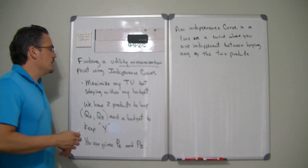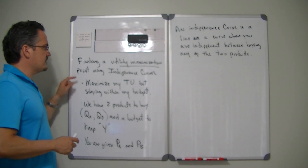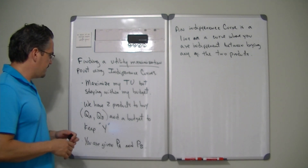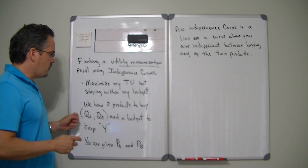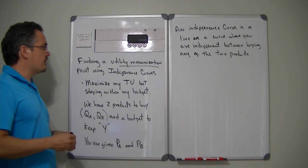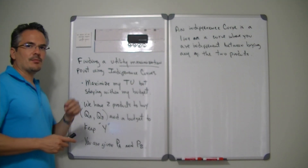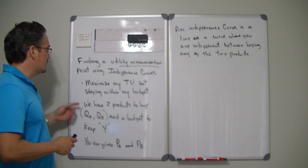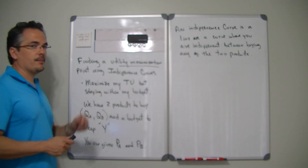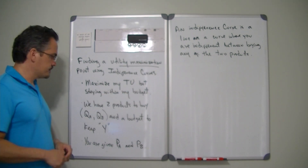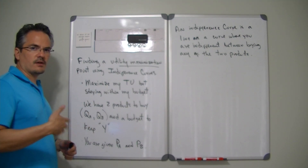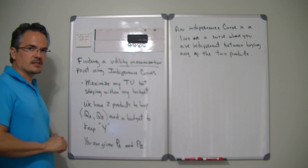So if you want to find the utility maximization point for somebody who's buying two individual products and you have the quantities that you want to buy but you want to maintain it within a particular budget, one of the things that you need to remember about finding utility maximization is that the point of utility maximization is to try to maximize my total utility but I need to stay within a particular budget.